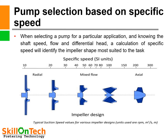When selecting a pump for a particular application, knowing the shaft speed, flow, and differential head, a calculation of specific speed will identify the impeller shape most suited to the task. In SI units, radial flow impellers generally range between specific speed 10 to 40, mixed flow impellers from above 40 to 150, and axial flow impellers from above 150 up to 300. You can decide the shape of the impeller based on the specific speed of the pump.